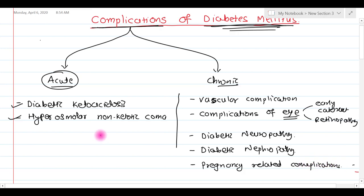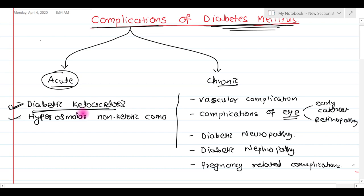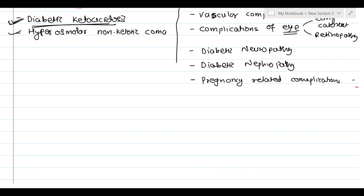These are the various acute and chronic complications of diabetes mellitus. In this video, we are not just going to discuss what the complications are — we are also going to discuss the biochemical basis of these complications, why they occur. Let us start with the first acute complication: diabetic ketoacidosis.